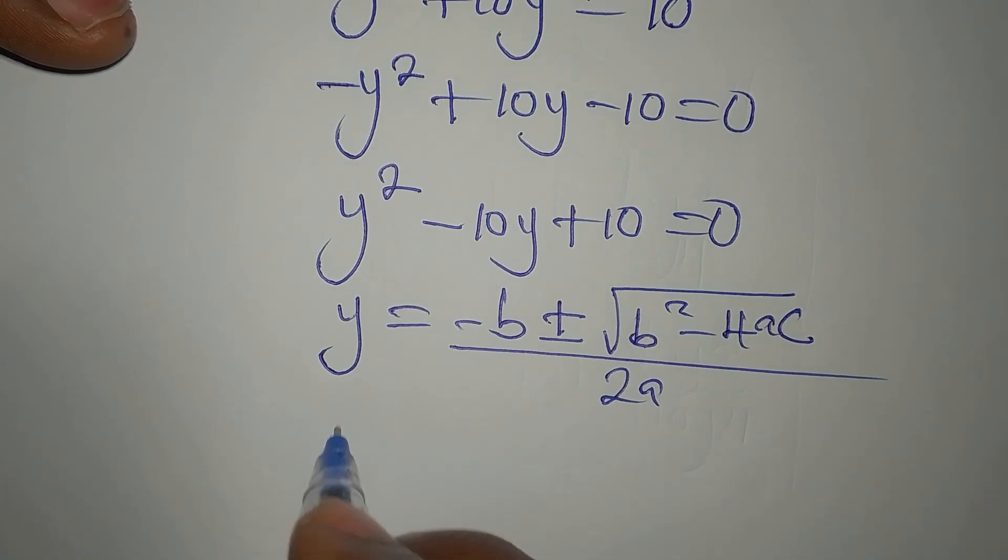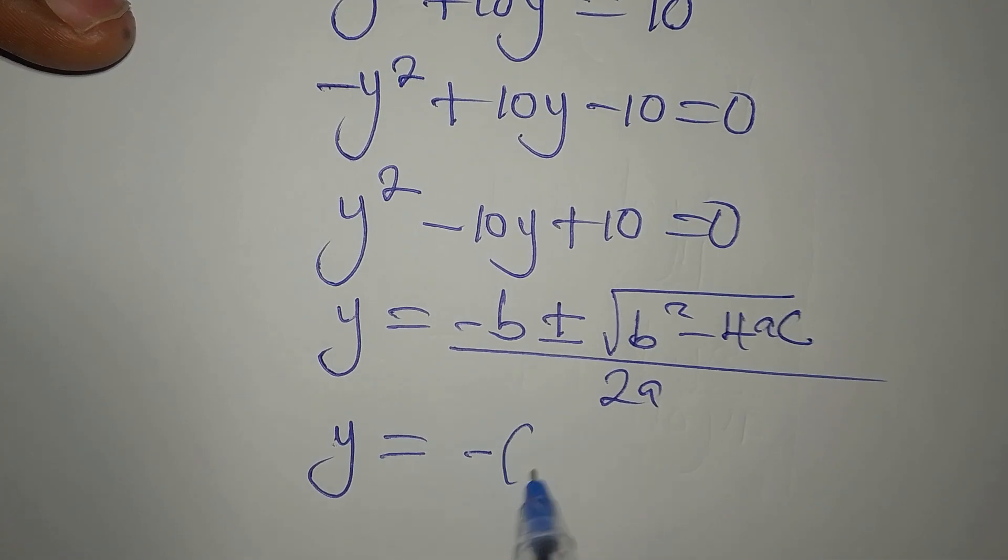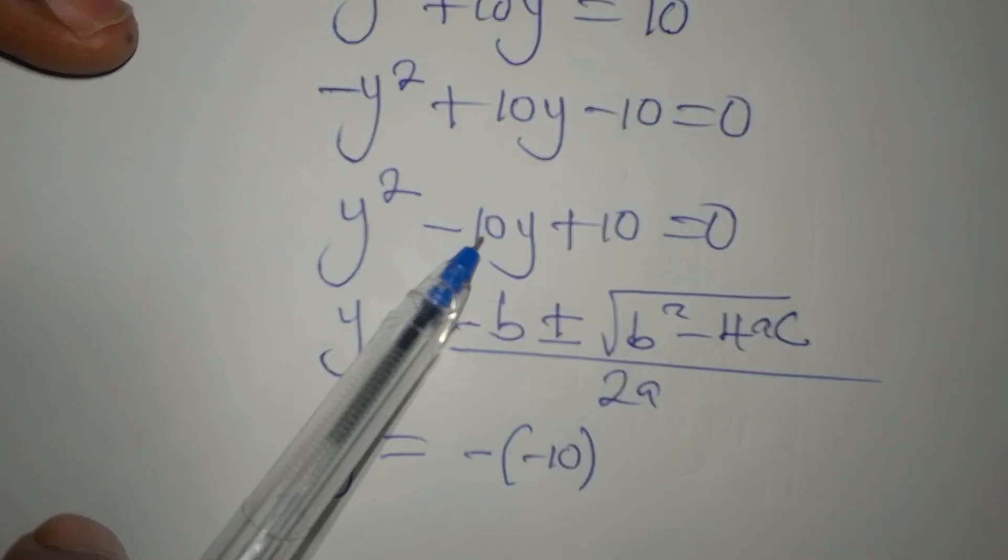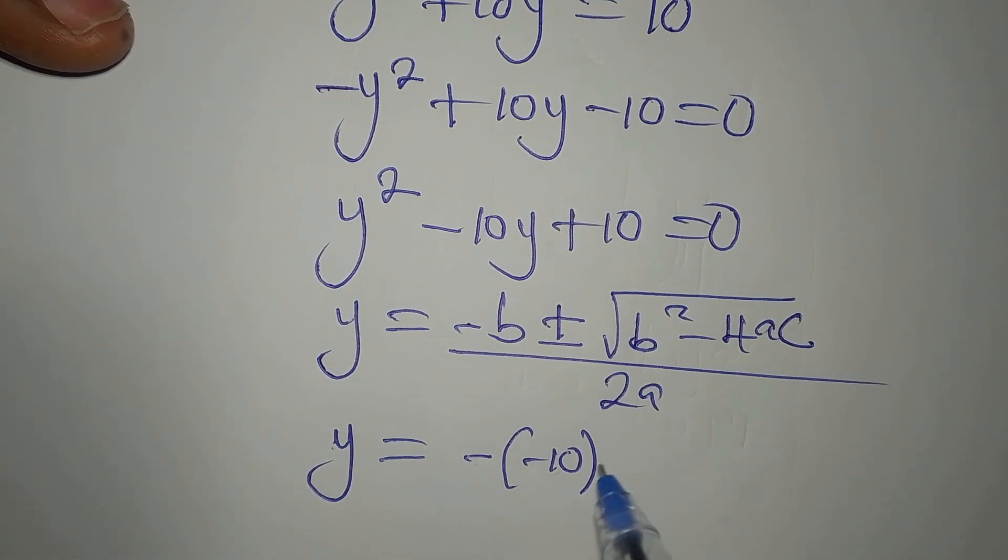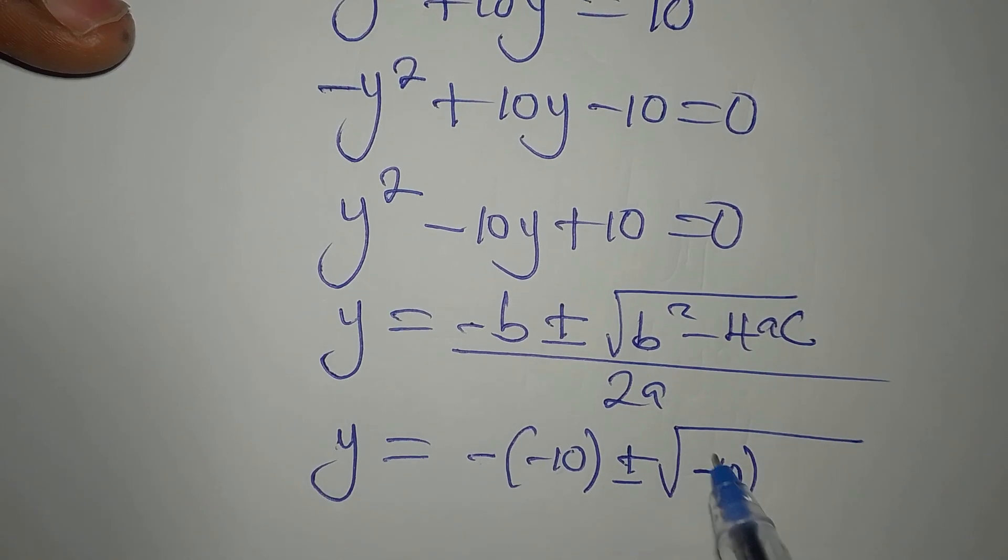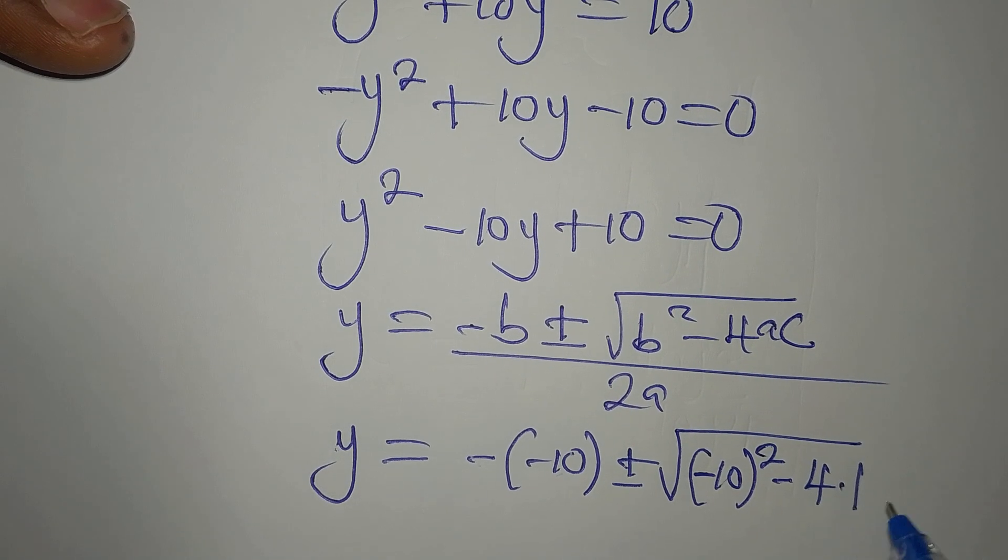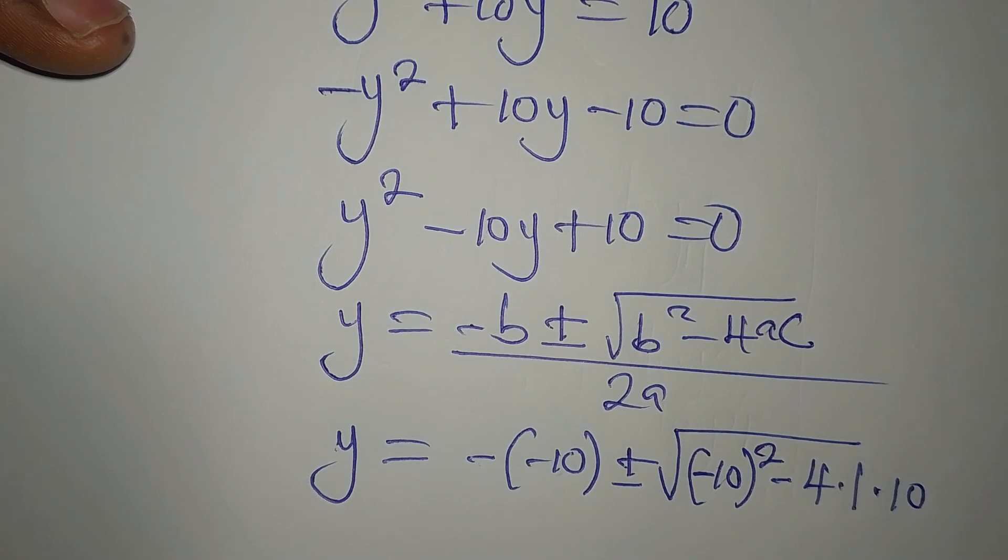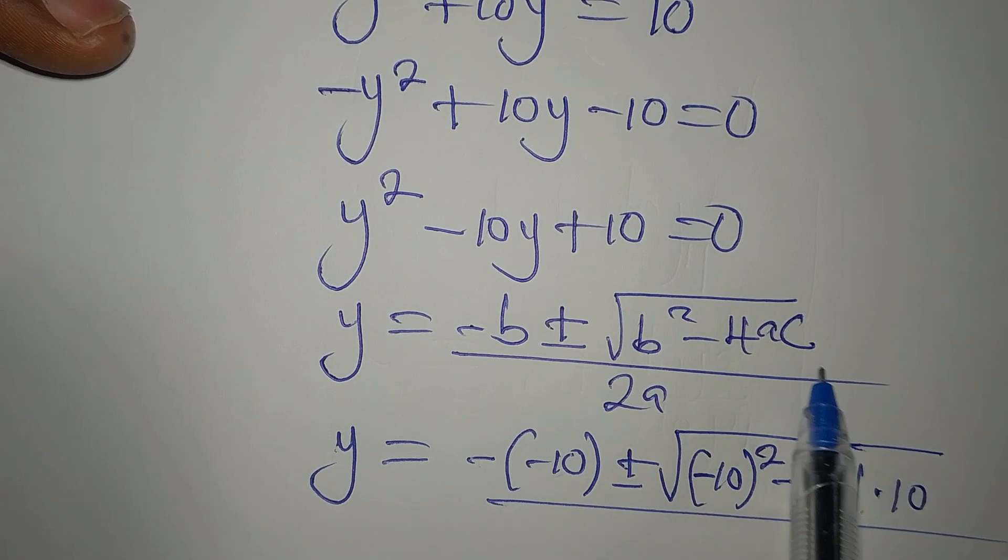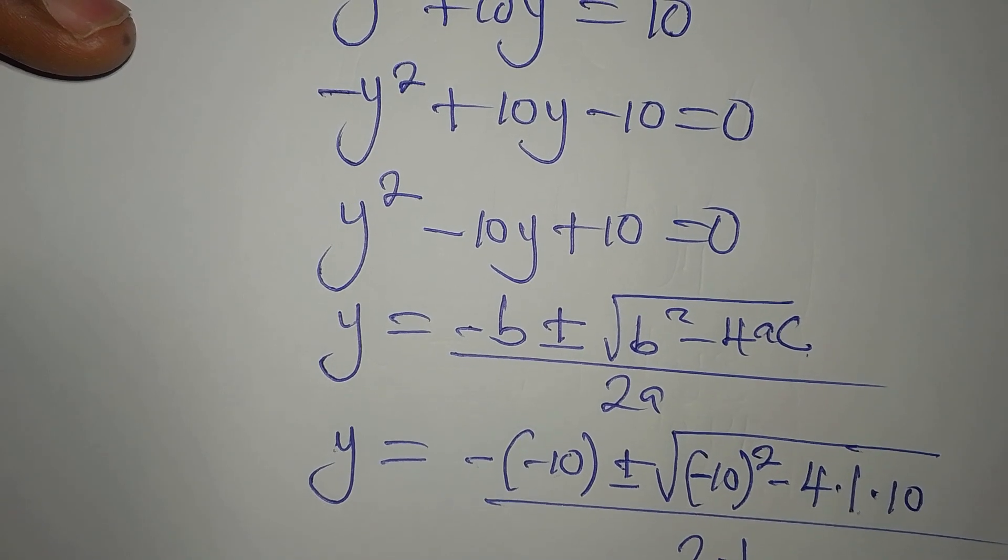Now, Y will be, in place of minus B, we'll write minus minus 10. Because this negative here is out and B itself is minus 10. Then, plus or minus B is minus 10. So we have minus 10 squared minus 4 times 1 times 10. This is because A is 1 and C is positive 10. So we divide by 2 times 1.